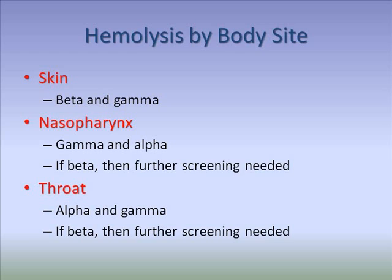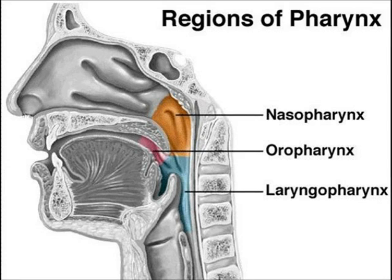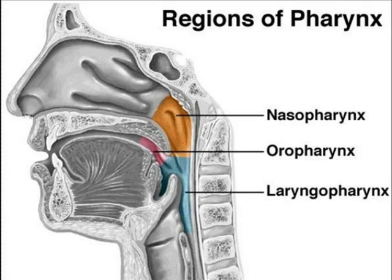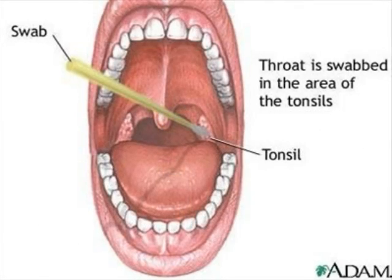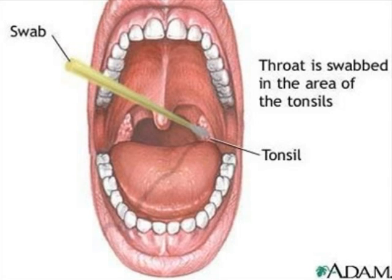For the throat, alpha hemolysis is the most common type of hemolysis seen. Gamma hemolysis would also indicate normal flora. Beta hemolytic colonies can be indicative of a true pathogen, Streptococcus pyogenes, the cause of strep throat and other infections. Remember that beta hemolysis on a plate from skin was normal flora, so truly the body site sampled does affect the interpretation. The nasopharynx was sampled through the nostrils; note how the site would share some flora with the throat. The throat was sampled by swabbing the back of the oropharynx near the palatine tonsils.